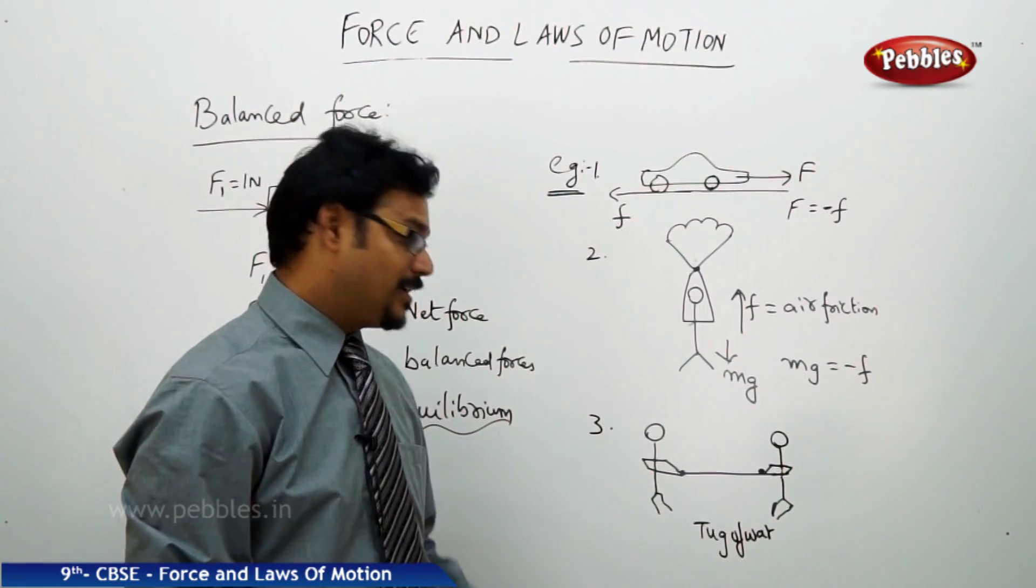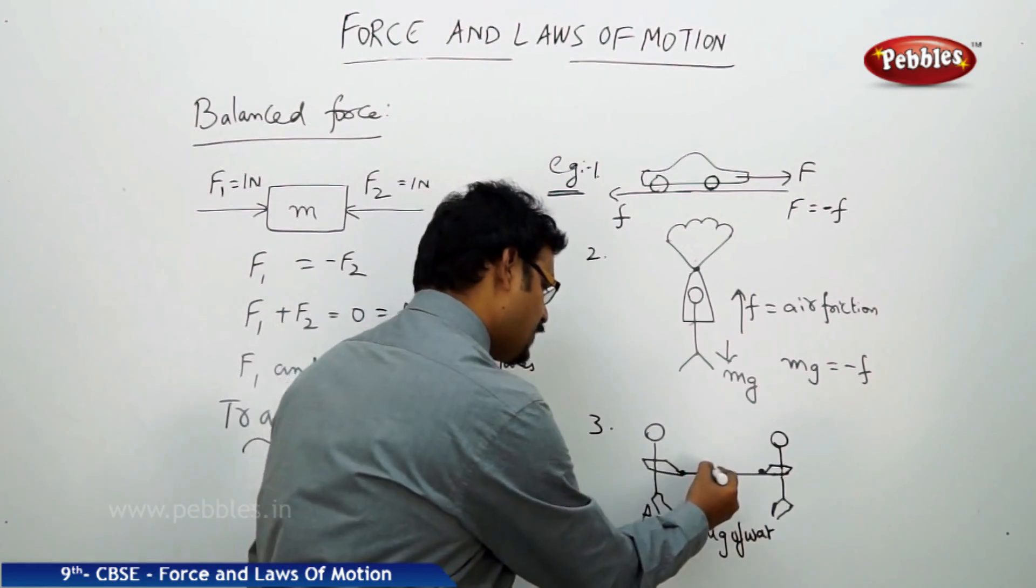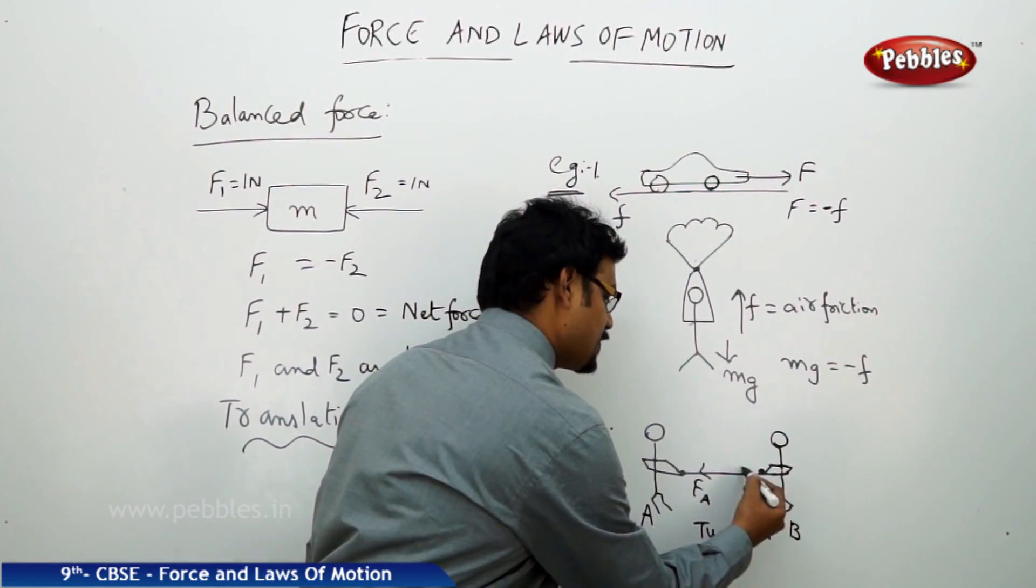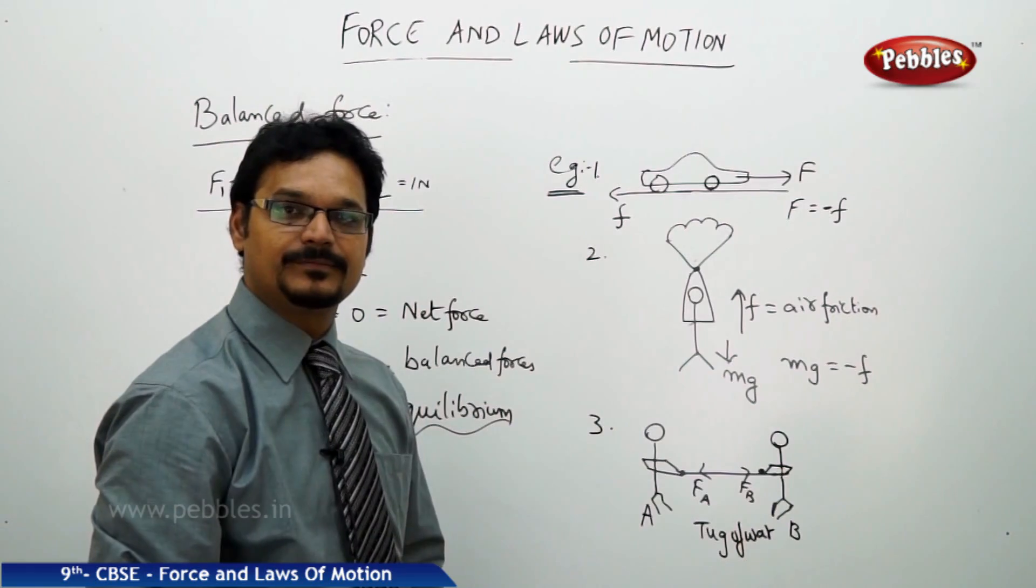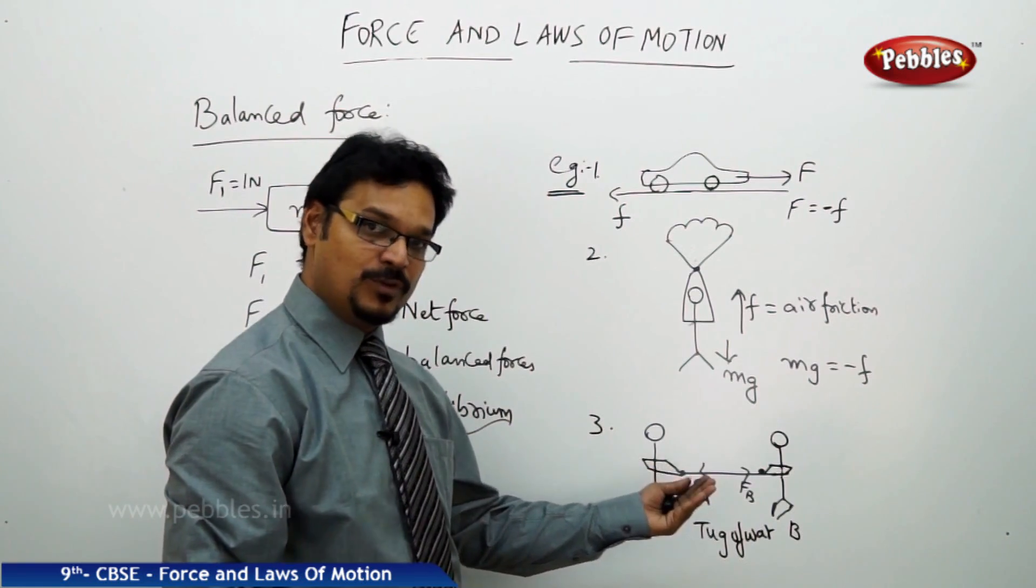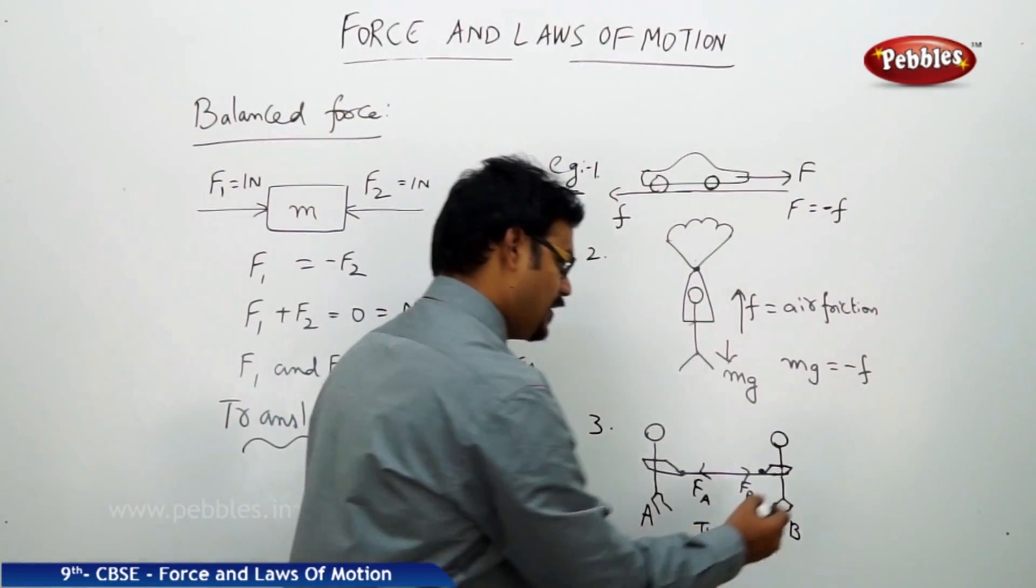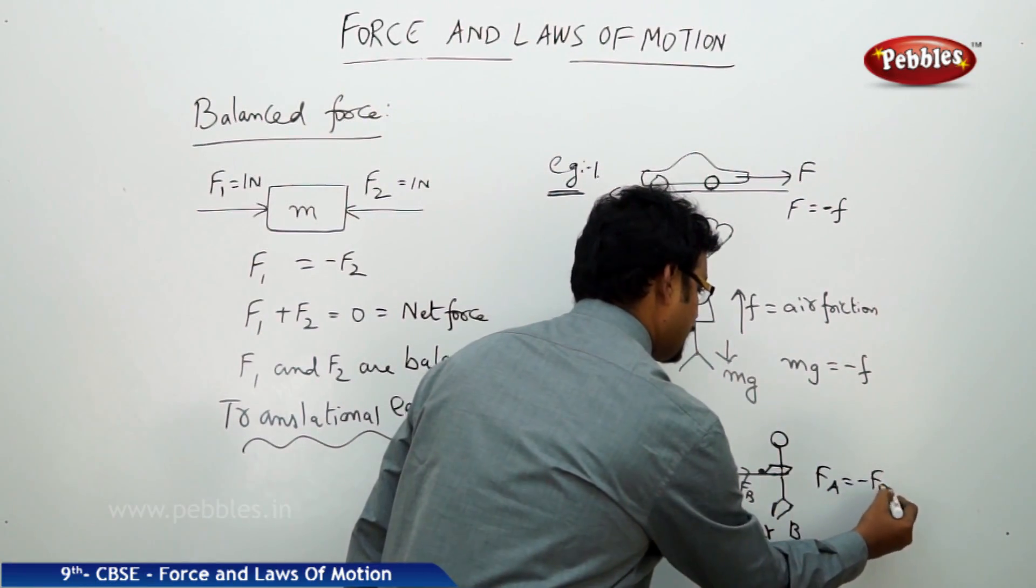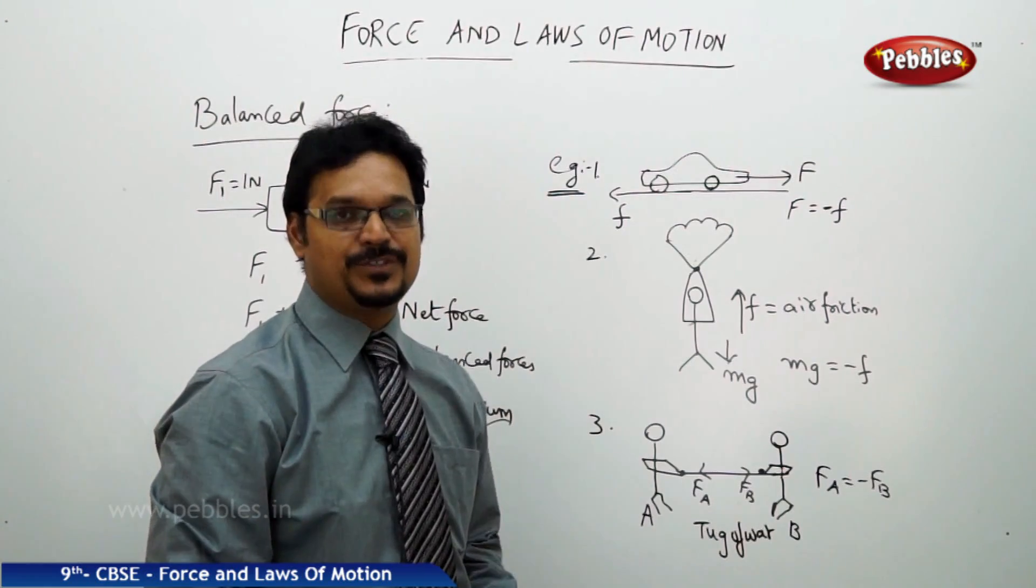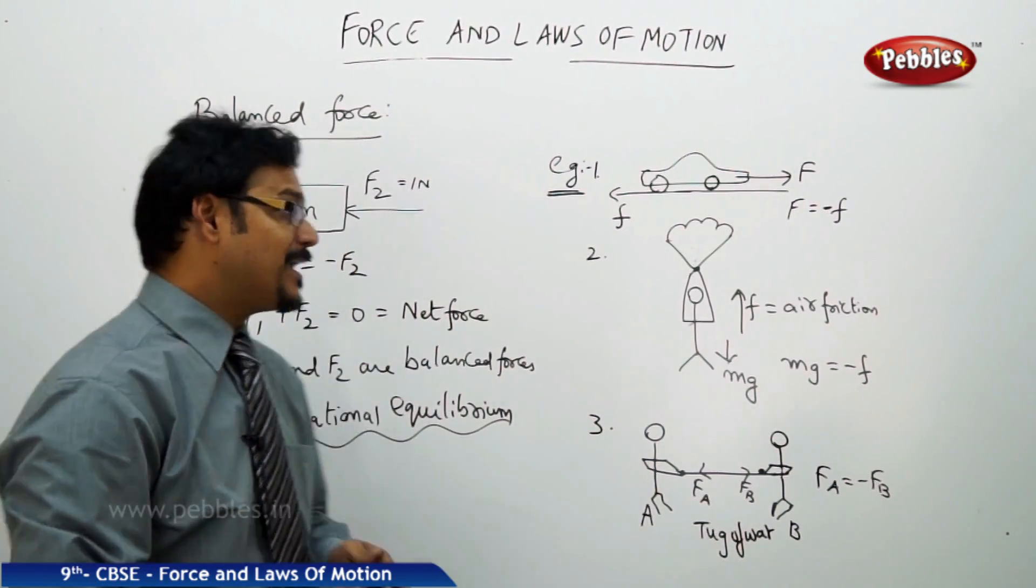So the third example, tug of war. This person A is applying the force towards him, say the force is FA. The person B is also applying the force towards him, say the force is FB. If FA is more, then the B person moves towards the left side. If FB is more, the A person moves towards the right side. If both are equal like this force, then both the persons are in the same state and FA and FB are called balanced forces and it is in translational equilibrium. So we have many examples to understand the balanced force.